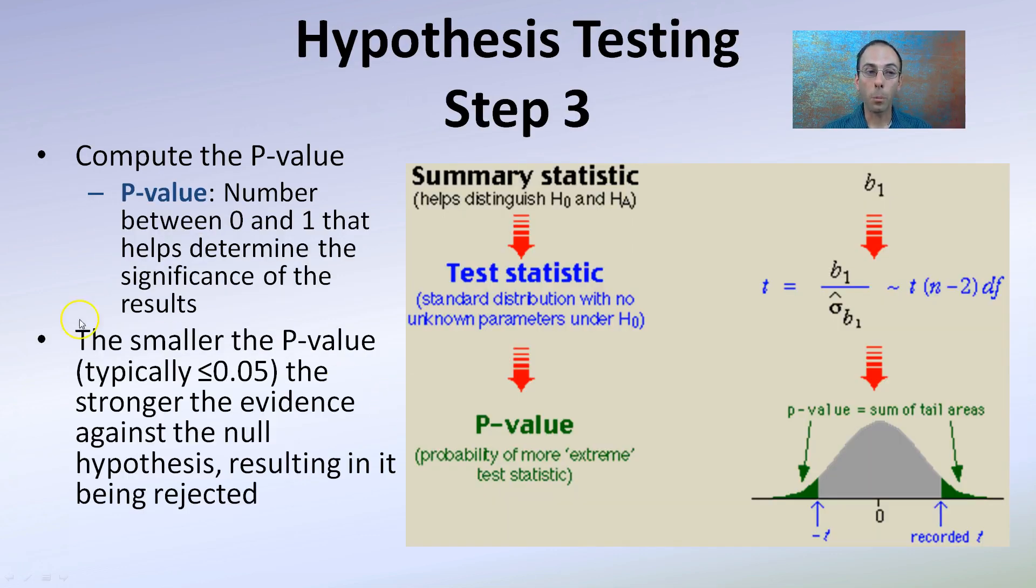Step three is determining a p-value, and it's a number between zero and one that helps determine the significance of the results. The smaller the p-value, the stronger the evidence against the null hypothesis. So if we have a p-value of 0.05, that would mean a 95% chance that the results are against the null hypothesis. It means only a 5% chance of there being an error. That's why it's important to have a very small value.